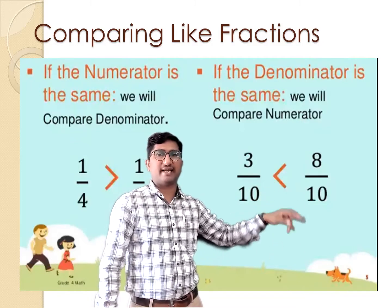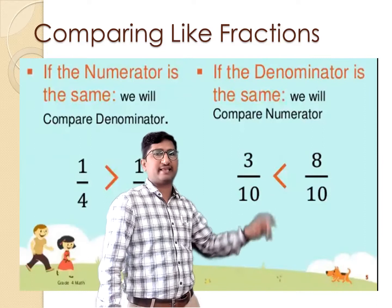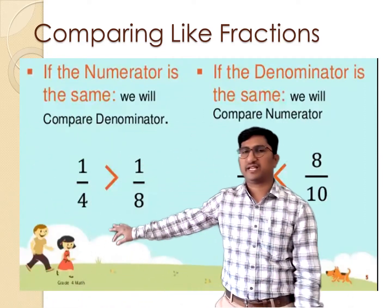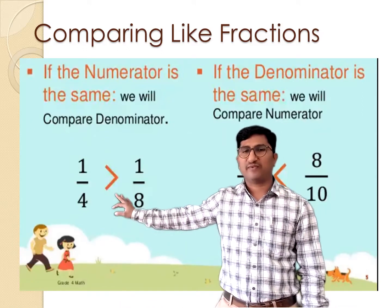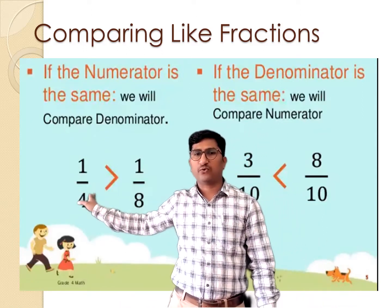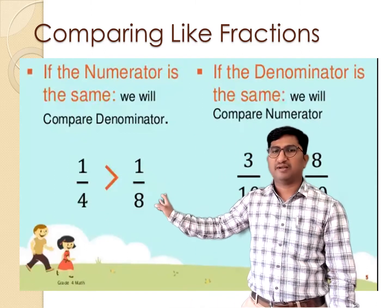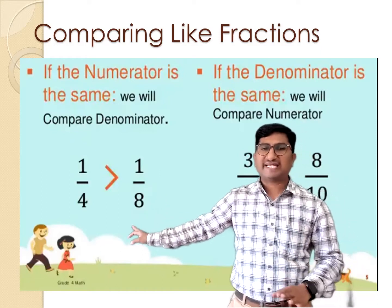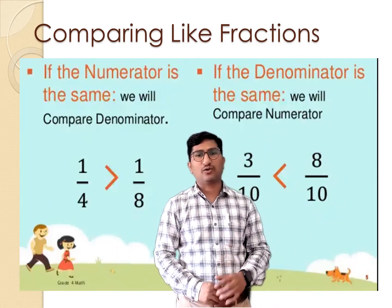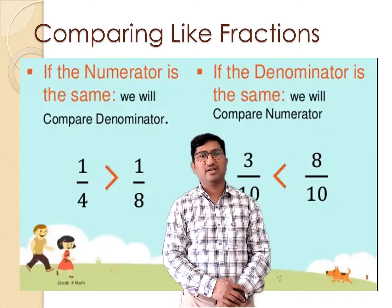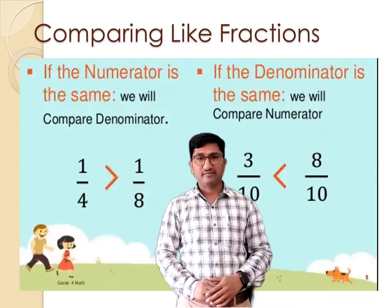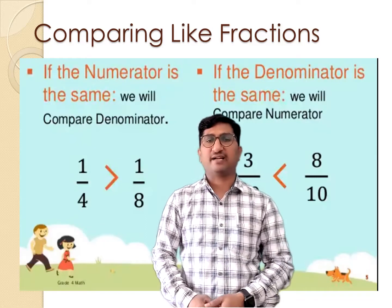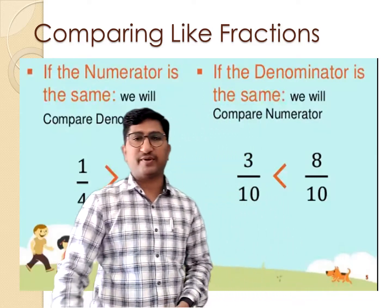So, 3 upon 10 is smaller than 8 upon 10, or you can say 8 upon 10 is greater than 3 upon 10. What about unit fractions — when the numerators are 1? Easily we can say 1 out of 4 parts versus 1 out of 8 parts: 4 equal parts and 8 equal parts, out of which we chose 1. So 1 upon 4 is greater than 1 upon 8. Even though the numerators are the same, the different denominators let you compare by observing the denominators.